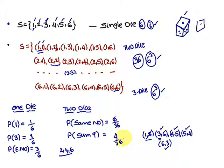Similarly, you can find out probability of getting a sum five, sum seven, eight, and so on and so forth. So this is about the problems on dice. Thank you.